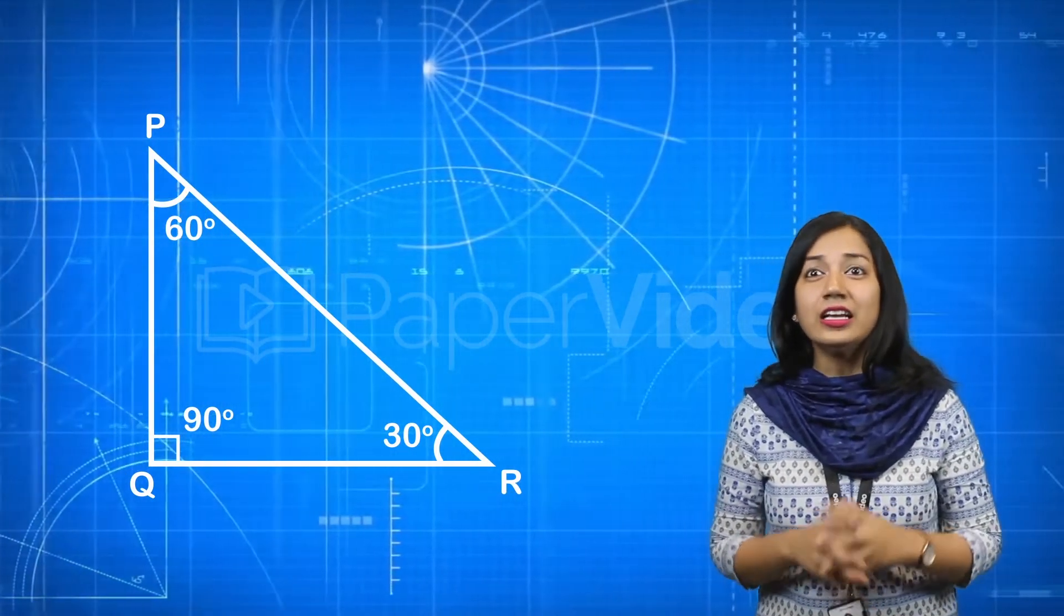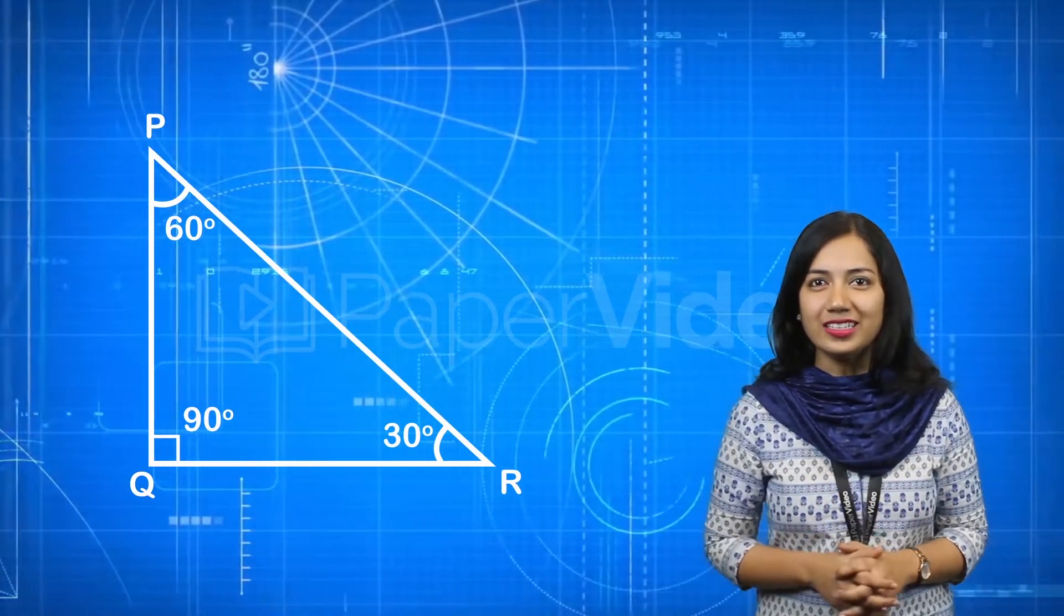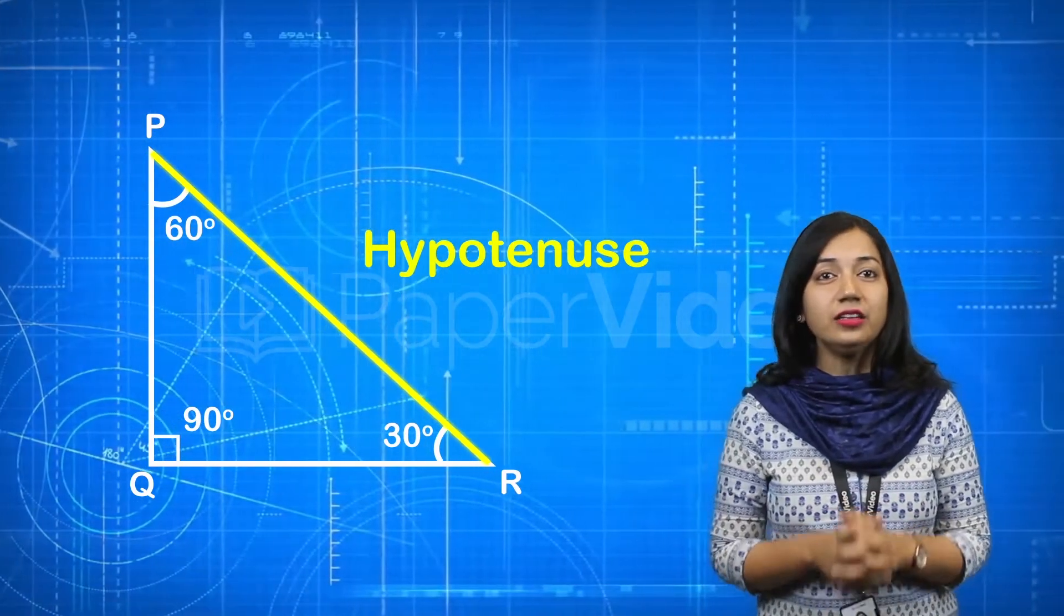In this triangle we can see that the side opposite to 90 degree is hypotenuse, that is side PR is the hypotenuse of triangle PQR.